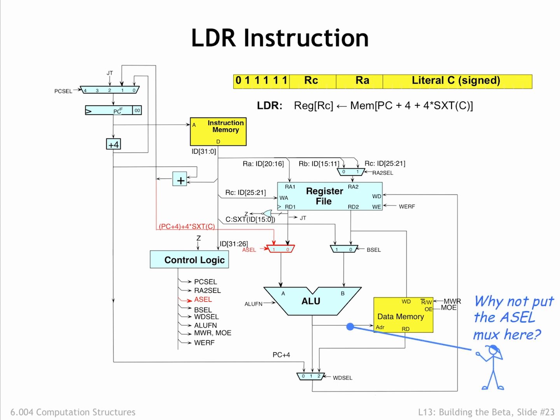This seems a bit complicated. Mr. Blue has a good question: Why not just put the A-cell MUX on the wire leading to the main memory address port and bypass the ALU altogether?